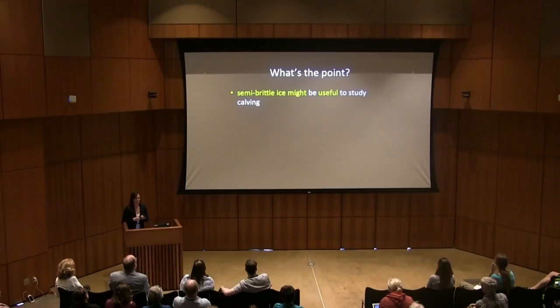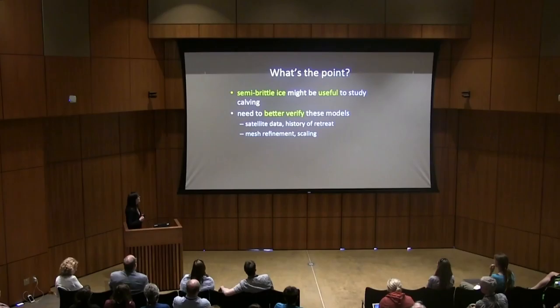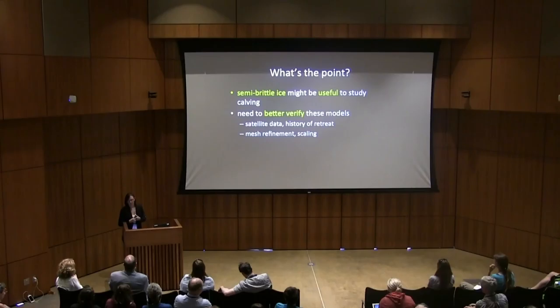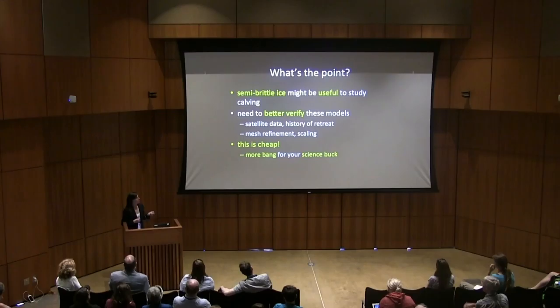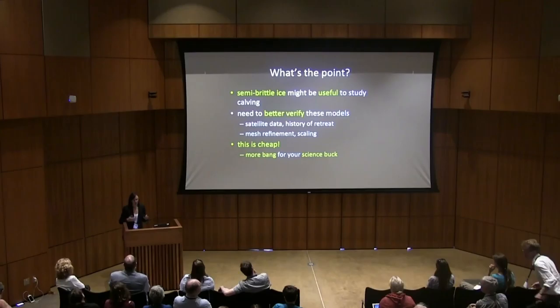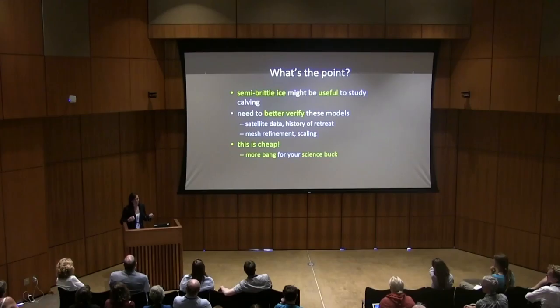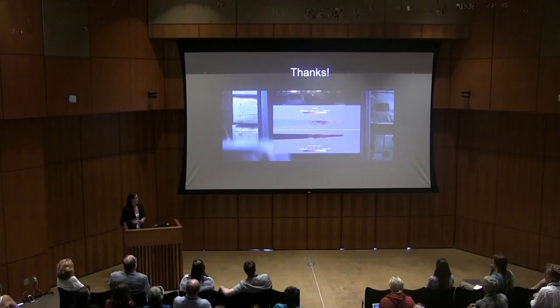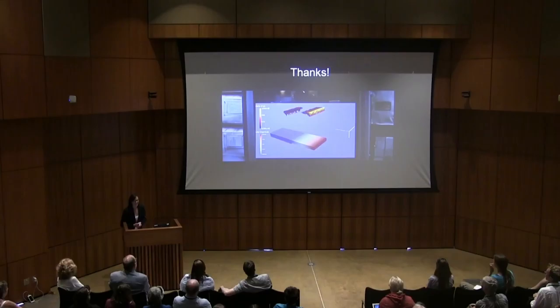Just to wrap up: semi-brittle ice might be useful in helping us study and project calving rates at many different locations around the world. But to be sure, this particular implementation of this rheology needs a lot of work. We need to better verify this sort of lightweight, process-based model against the vast array of data that we have, and really ensure that we are correctly capturing discrete calving histories around the world. But best of all, this model is cheap — all of these simulations took less than an hour on four cores. In an environment where the funding pie is the same size and the party of pie eaters keeps growing, cheap science that's low risk and potentially high reward is always a good thing. Come find me outside if you're interested — I'd be happy to unpack anything.